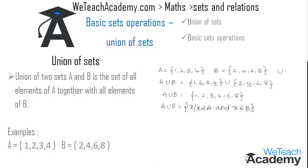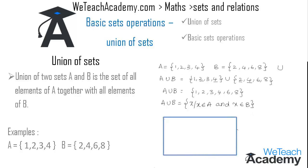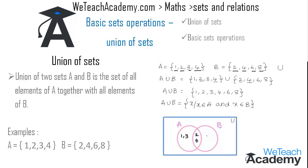Now let us represent this example in the Venn diagram. We have a rectangle representing the universal set, and two circles representing sets A and B. The common elements of A and B are 2 and 4, written in the overlapping region. The remaining elements of A — 1 and 3 — are written in A's region, and the remaining elements of B — 6 and 8 — in B's region.